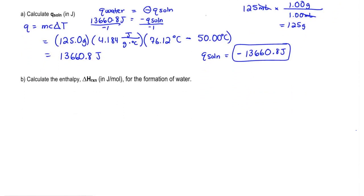Now for B, we have to calculate the enthalpy, delta H, in joules per mole for the formation of water.